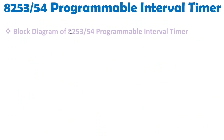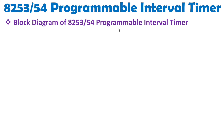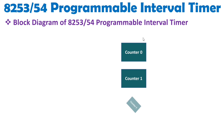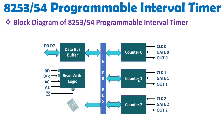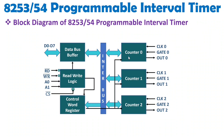Let us try to understand the basic block diagram of the programmable interval timer. There are a total of 3 counters — counter 0, counter 1, and counter 2 — and these counters are 16 bits wide and are down counters. We can use them in BCD as well as binary form. The data bus buffer is connected with the system bus of the microprocessor, and the read/write logic is used to read and write data over D0 to D7. The A1 and A0 lines are used to select a counter as well as the control word. The chip select is an active low signal that identifies whether the chip is selected.